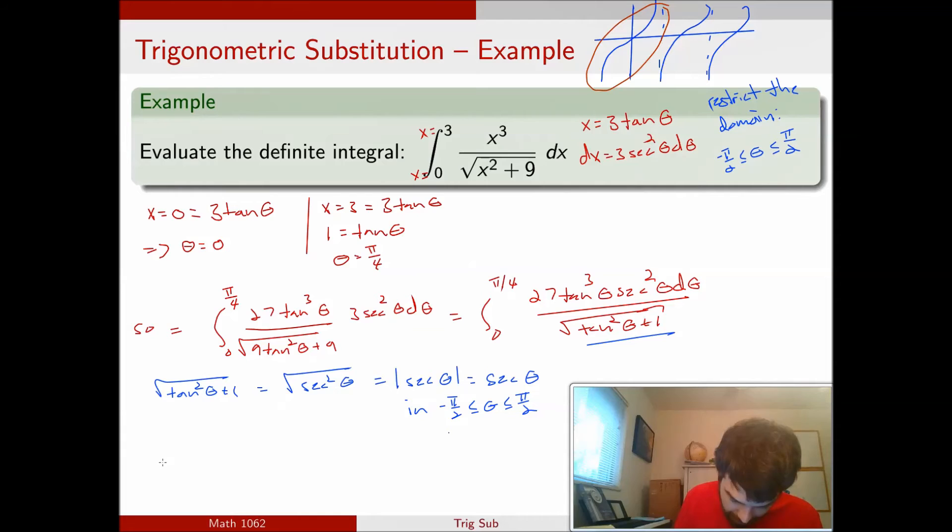So this restriction of the domain wasn't just a theoretical point we put at the beginning. It turned out to be critical in the middle of our computation, because I didn't have to break this into multiple cases. Knowing that, can we clean it up further? 0 to π/4. My 27 is still along for the ride. tan³ θ, sec² θ, there's a copy of secant that goes away, so now it's just secant θ dθ. To summarize, we've made this trig substitution to an integral that initially didn't have any trig. We were careful with the restriction of the domain, and now we've converted it faithfully. This is just a trigonometric integral, an integral we could have done last class.